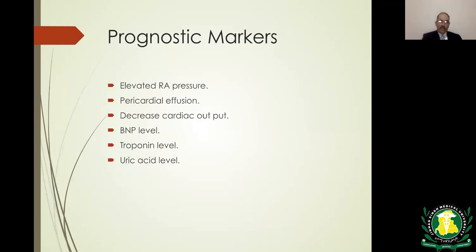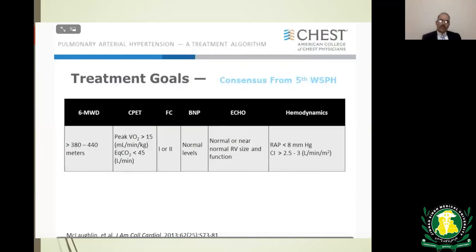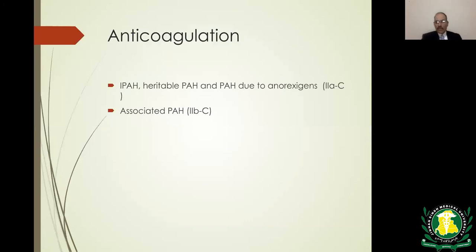Treatment goals include getting patients to walk more than 380 meters on 6-minute walk test, maintaining functional class 1 or 2, normalizing BNP, normalizing right ventricular size and function on echocardiogram, and achieving hemodynamic targets of right atrial pressure less than 8 and cardiac index more than 2.5. Anticoagulation is recommended for PAH associated with chronic thromboembolic disease and is a weak recommendation for primary PAH.